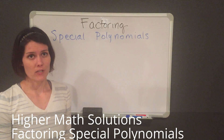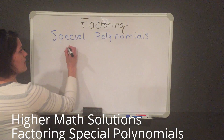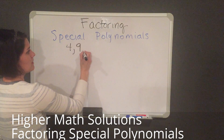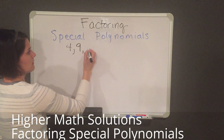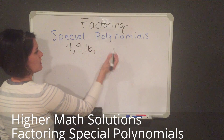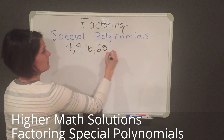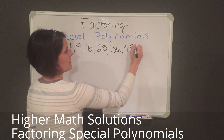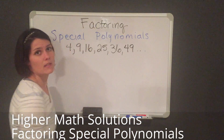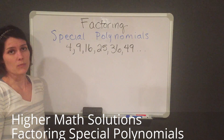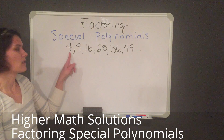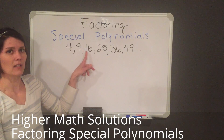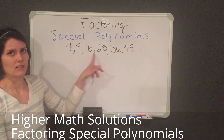So let's talk about the perfect squares first. A perfect square is when you multiply the number by itself. So this would be 2 times 2, 3 times 3, 4 times 4, and so forth.